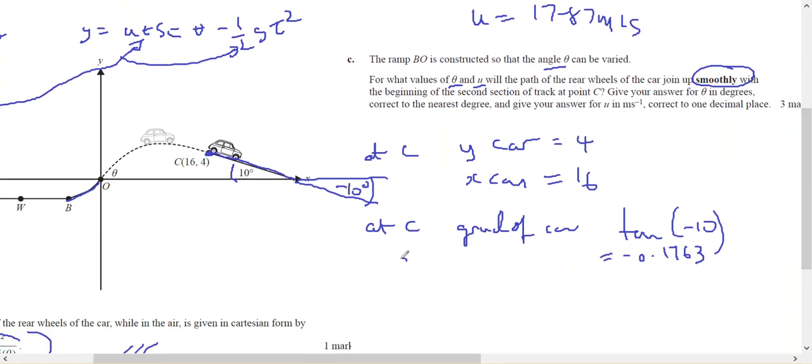So I'm going to do simultaneous equations on my calculator. That 4 equals 16 tan theta minus 4.9 times 16 squared on u squared cos theta squared. And that negative 0.1763 equals the derivative.